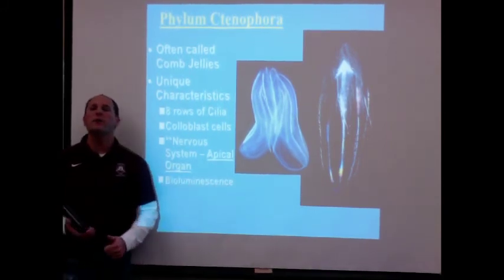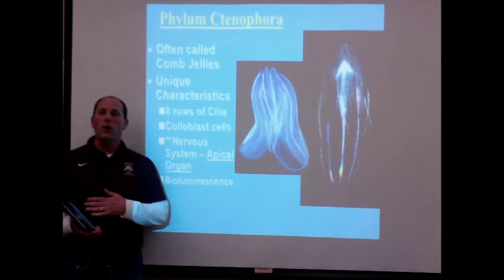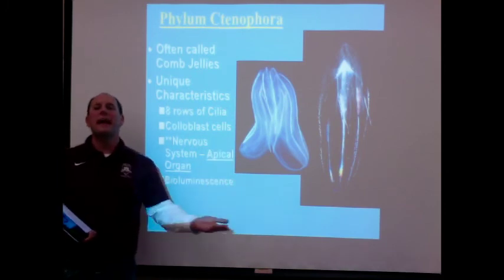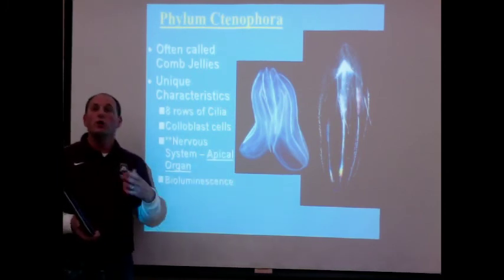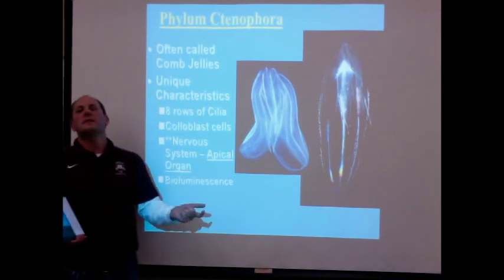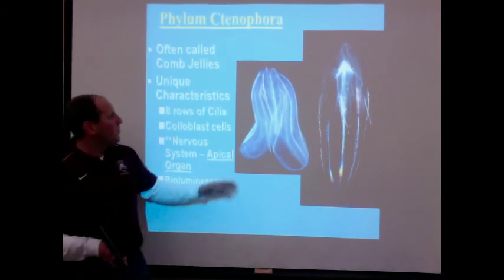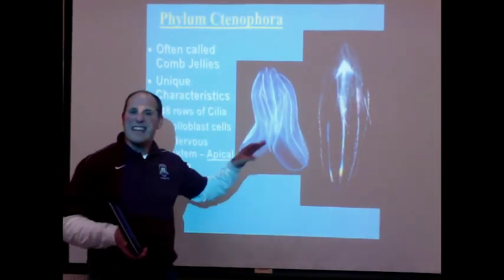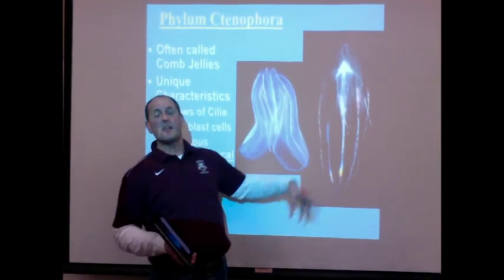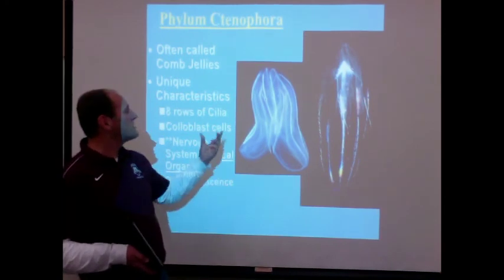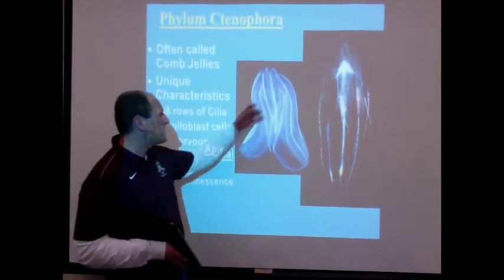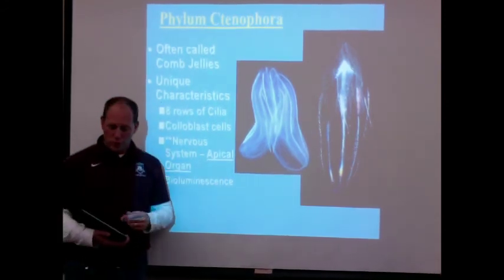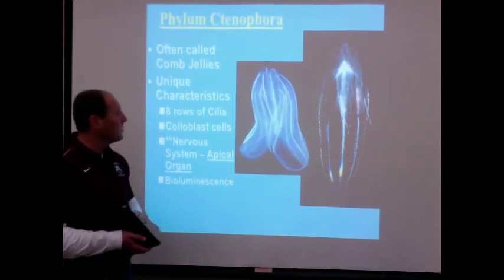Lastly, bioluminescence — these guys can actually glow. We find them often at depth, down past where light reaches, so they glow to attract organisms they might be able to eat. The glow is not just the picture or a camera flash — it's the actual organisms emitting light. It's produced by a couple different kinds of proteins in their cells; when these proteins come in contact with each other, they glow. That bioluminescence helps them attract prey.